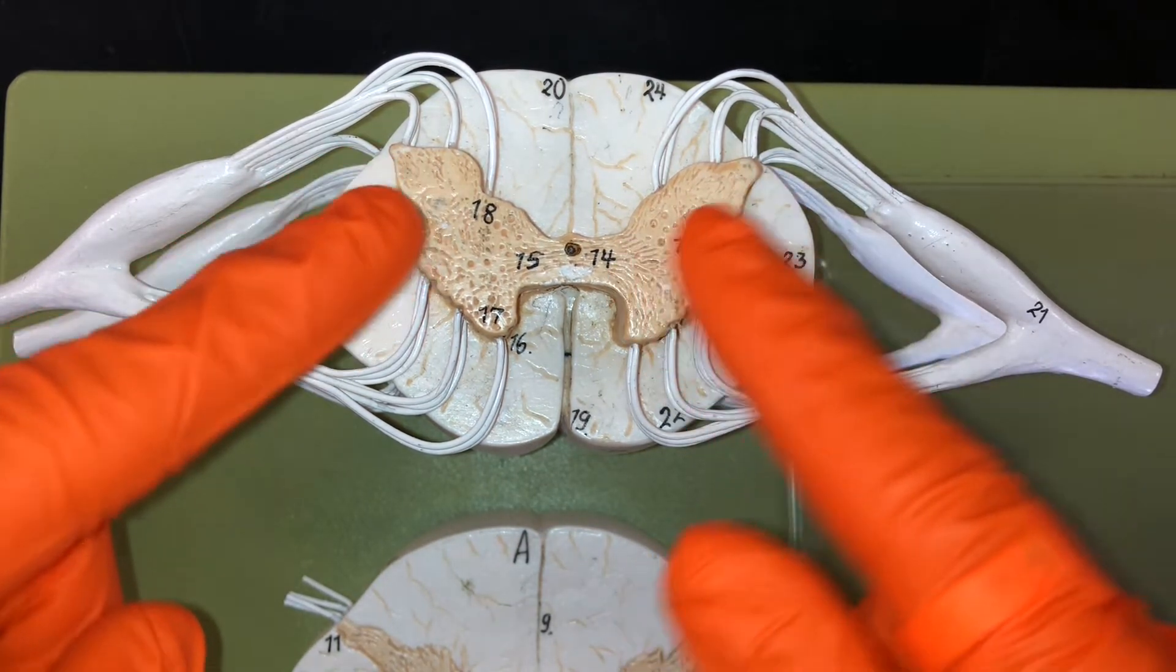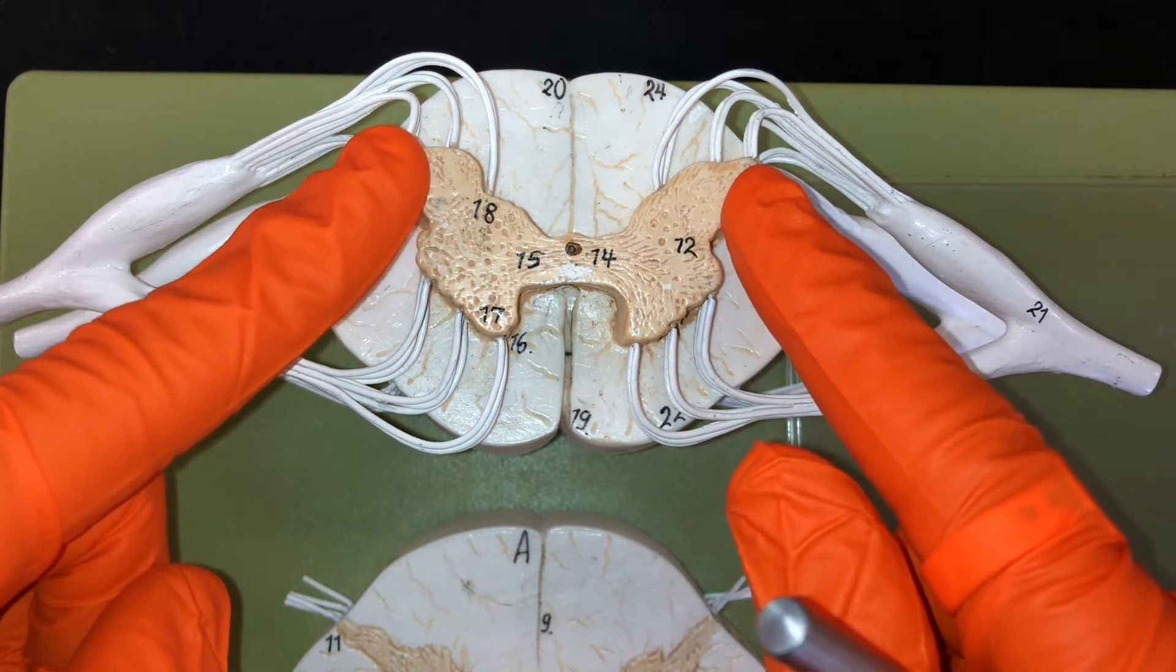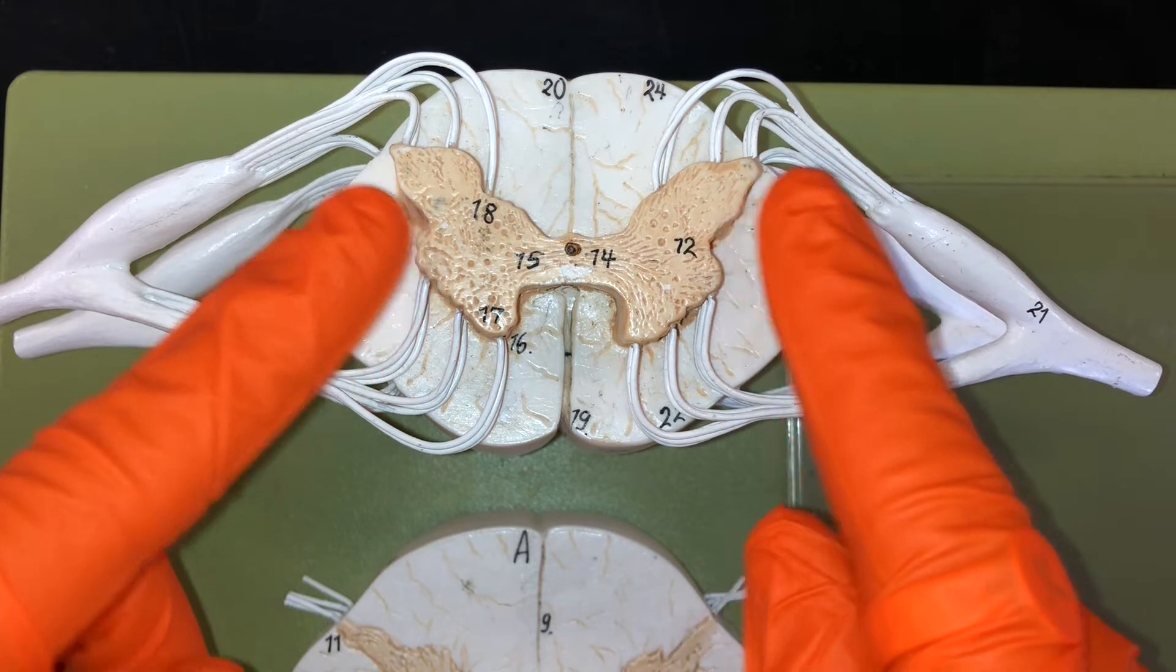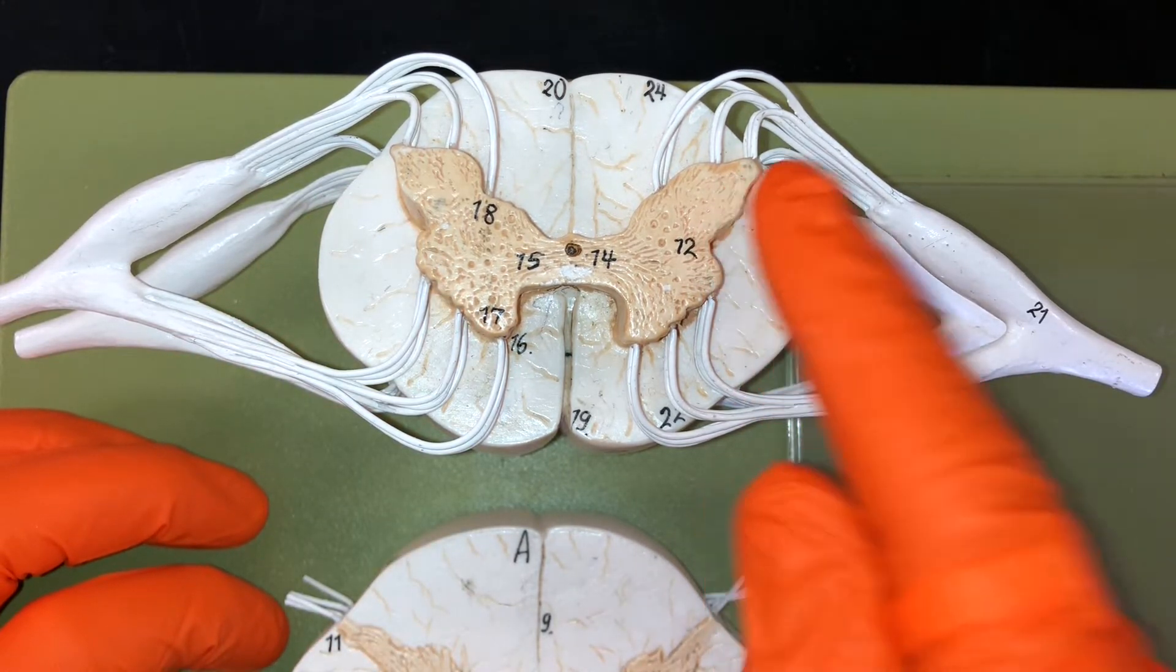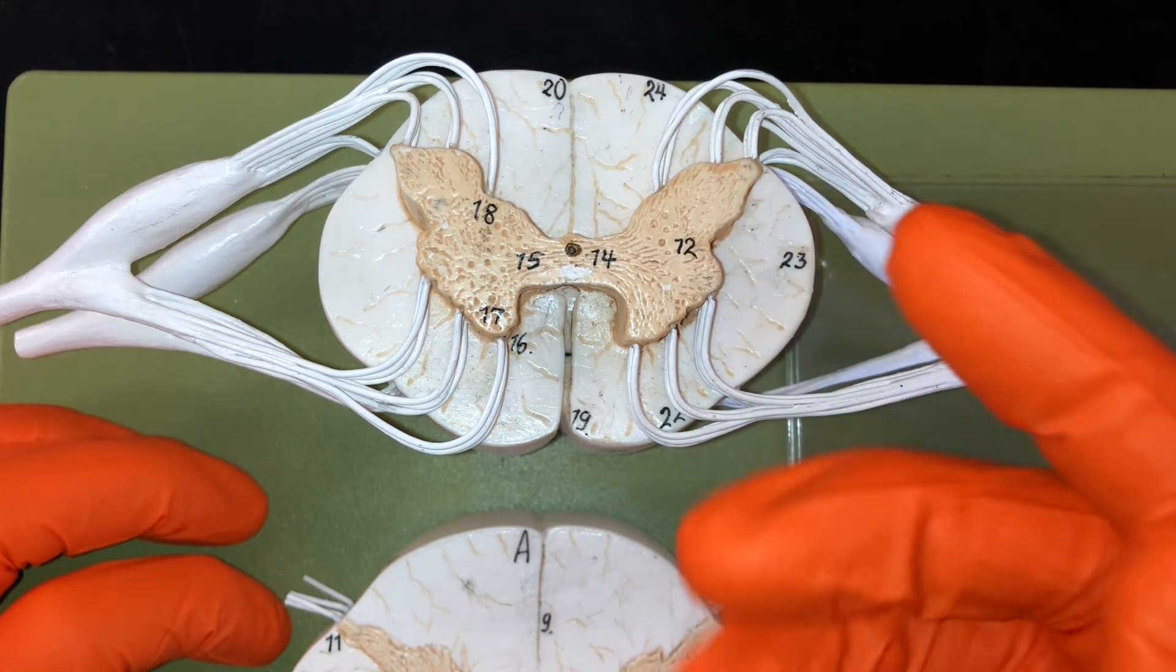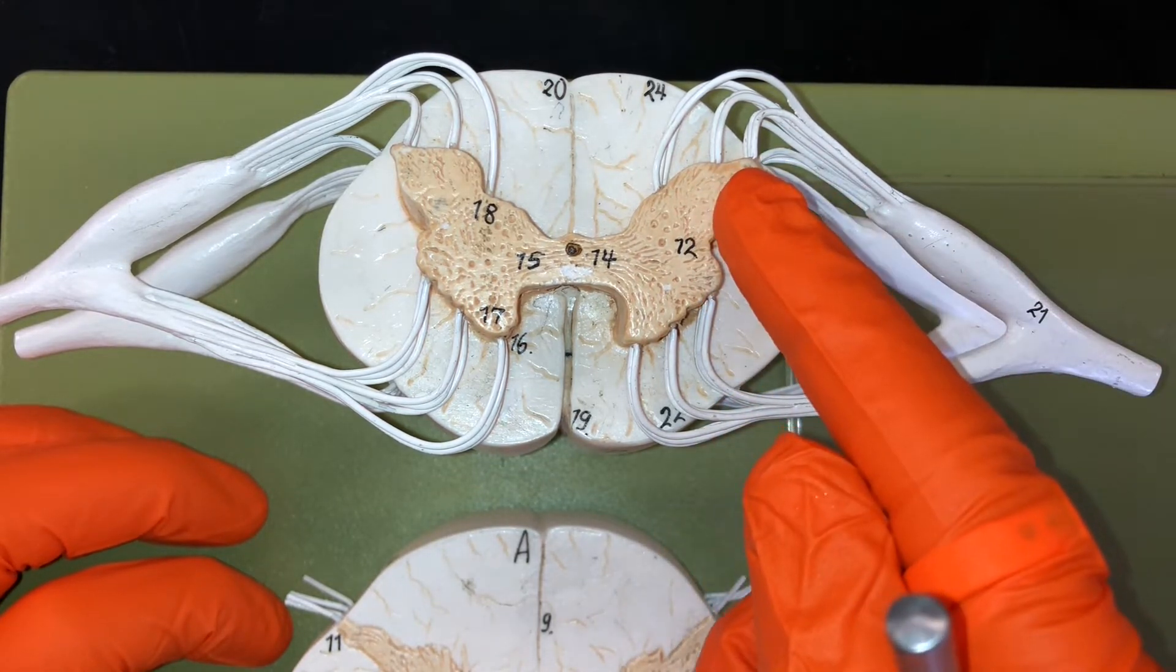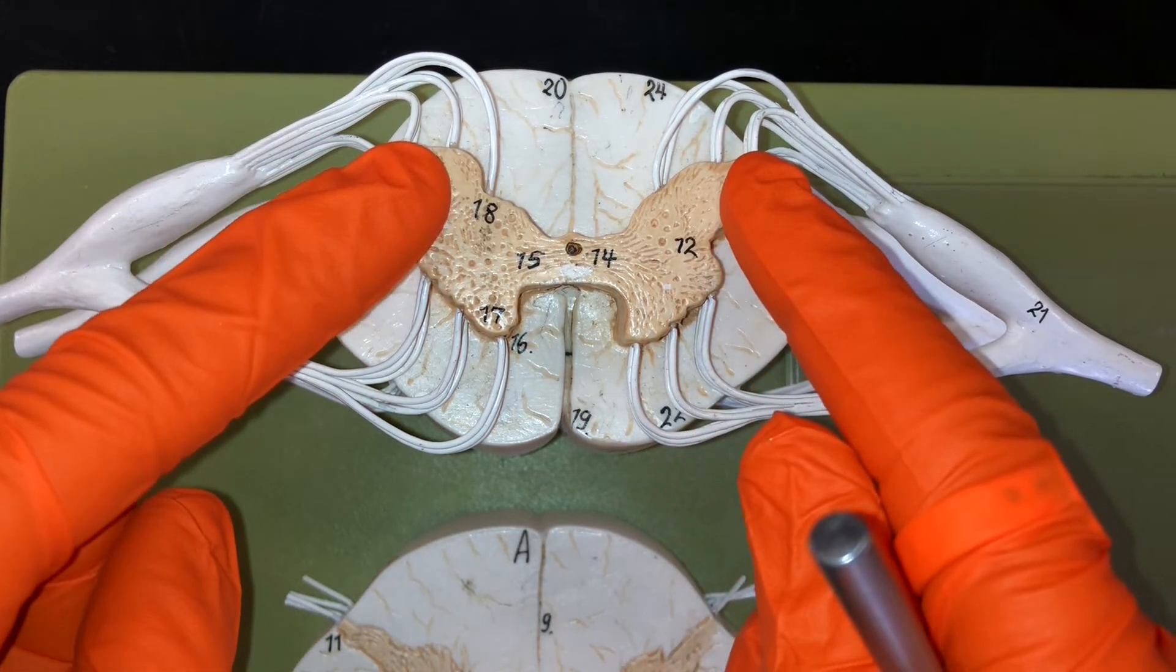Remember, interneurons are those neurons that are located entirely within the central nervous system. And we have these pathways, somatic sensory pathways and visceral sensory pathways. Those are the things that will connect to things like tactile receptors in the skin or baroreceptors of the urinary wall that tell our bladders that they are filling and we need to void.